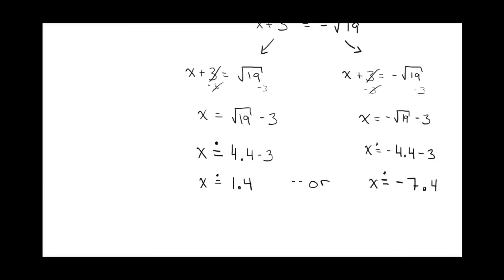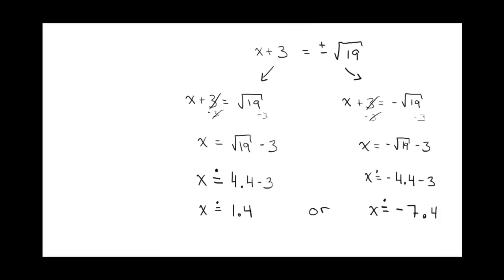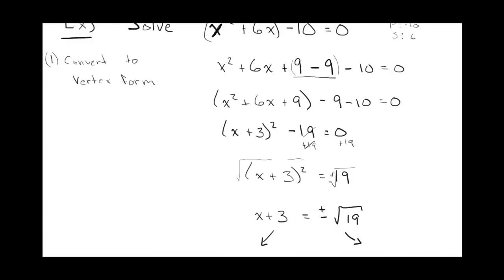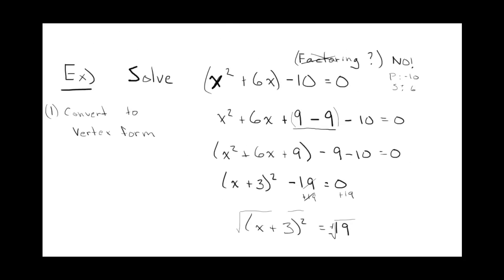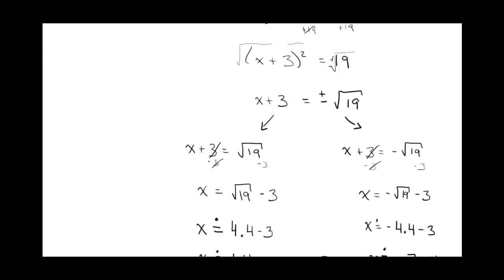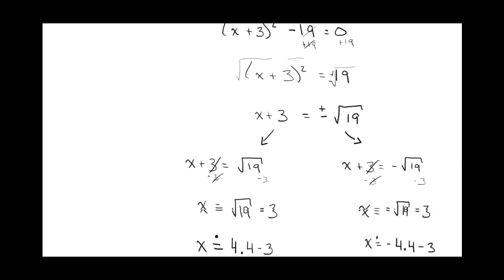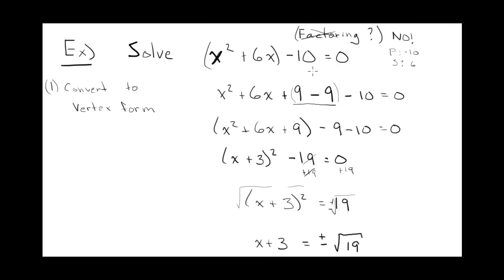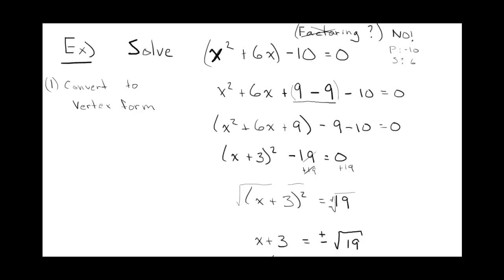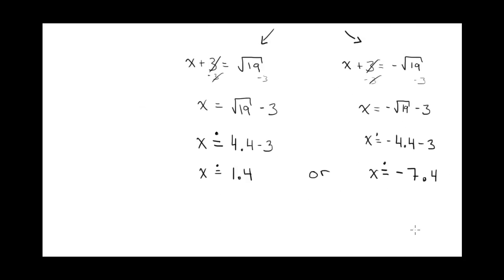That's how we can solve a quadratic equation that was not factorable originally. Based on the answers — big decimals — you definitely weren't going to be able to factor because the factors would have had those decimals in them. So this is how we can solve by isolating, or square rooting. Thank you.